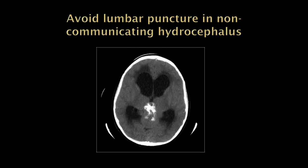So we've got a mass here — let's say this is compressing the third ventricle and cerebral aqueduct — so the lateral ventricles are going to just dilate.